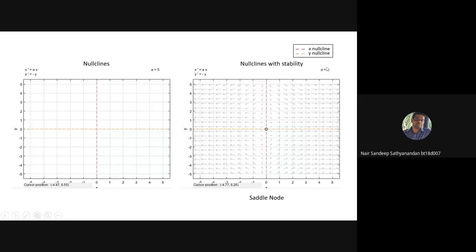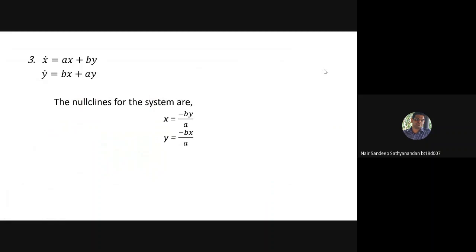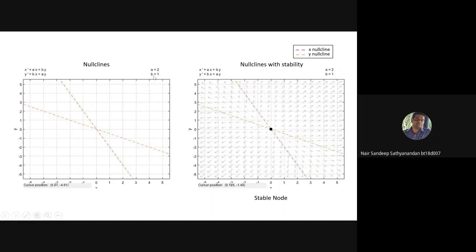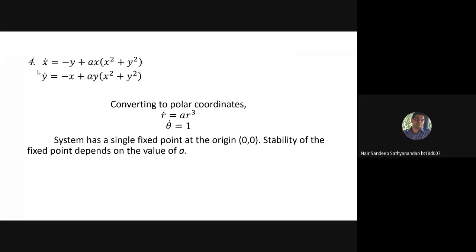The slope of the divergence can be controlled using the parameter a. Solving the dynamical equations we get the nullclines as x = -by/a and y = -bx/a. In this case with a=1 and b=2 it is a saddle node. The tool allows us to vary various parameters and equations without actually solving by hand — it is a convenient way of visualizing complex dynamical systems.